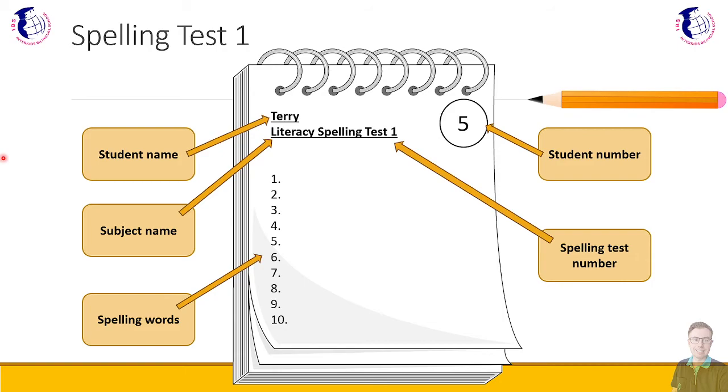Word number four. I. Word number five. Two. As in, I went to the shop, not the number two. Word number six. Was. Word number seven. It. Word number eight. He. Word number nine. We. And word number ten. In. Okay.